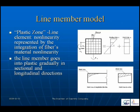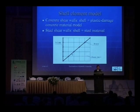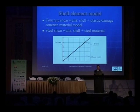For line member elements, we use a plastic fiber section model. The cross-section of the member is represented by integration of material fiber units, so the line member goes into plasticity gradually in the longitudinal direction. For shear elements such as concrete shear walls, we use shear plus plastic damage concrete material. The model handles shear walls with built-in columns and built-in bracing, and can combine rebar and concrete reinforcement.